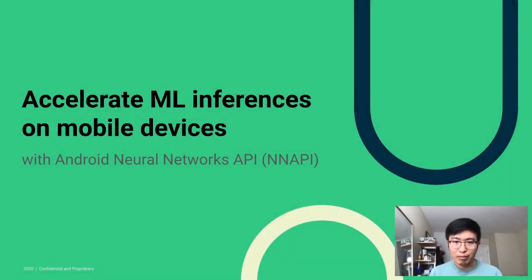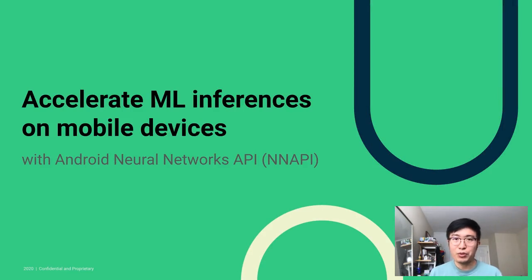This is Miao Wang. I am a software engineer working on Android Neural Networks API at Google. Today, I'm happy to talk about how to accelerate ML inferences on mobile devices with the help of Android Neural Networks API.